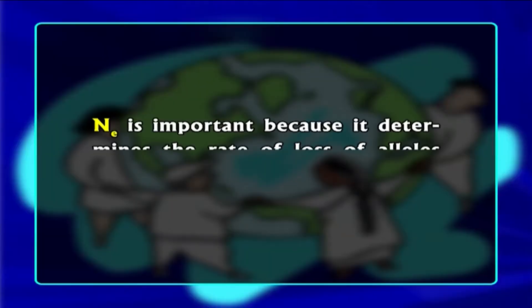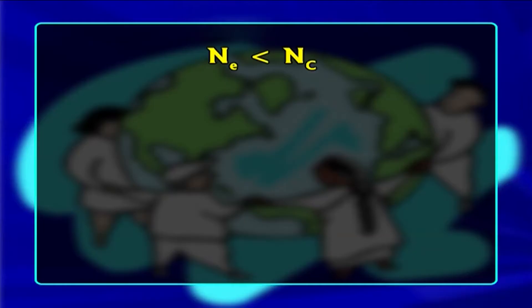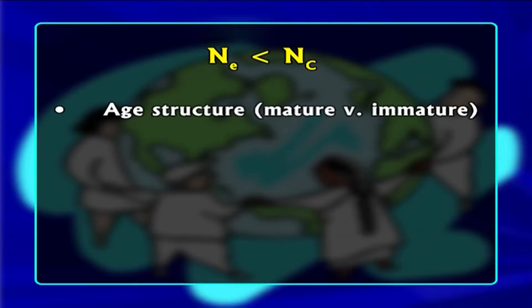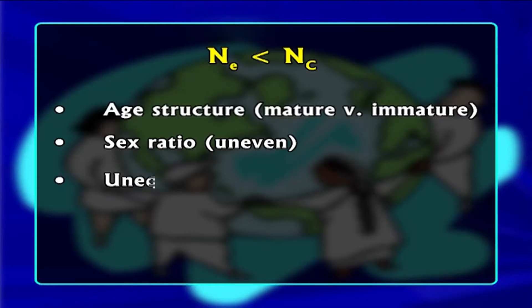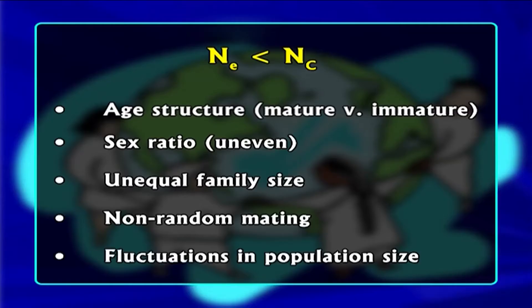The effective population size is very important because it determines the rate of loss of alleles per generation. It is important to note that Ne — effective population size — is always smaller than Nc — the census population size — because of age structure, meaning mature versus immature individuals, and also because of uneven sex ratio, unequal family size, non-random mating, and fluctuations in population size over time due to environmental and human-induced factors.